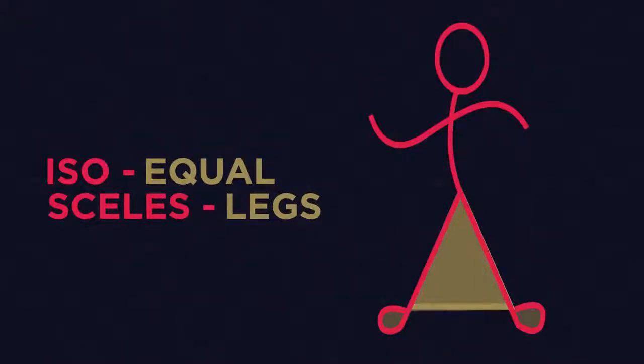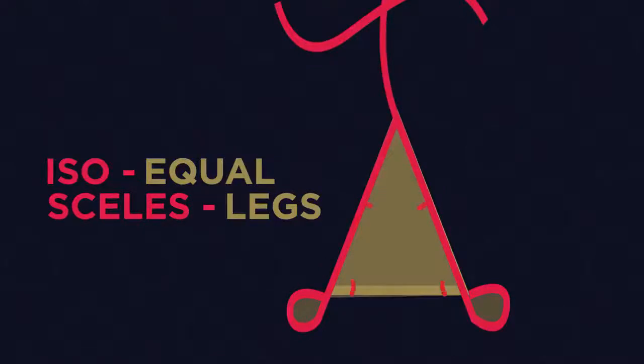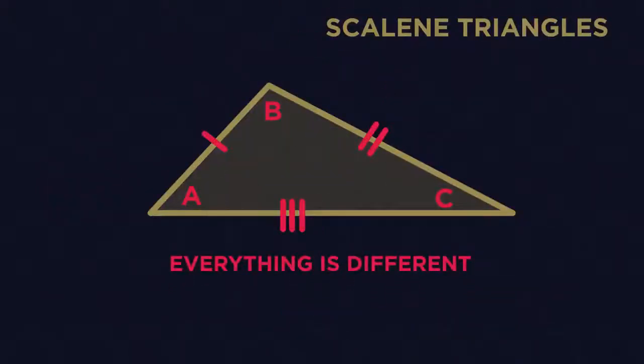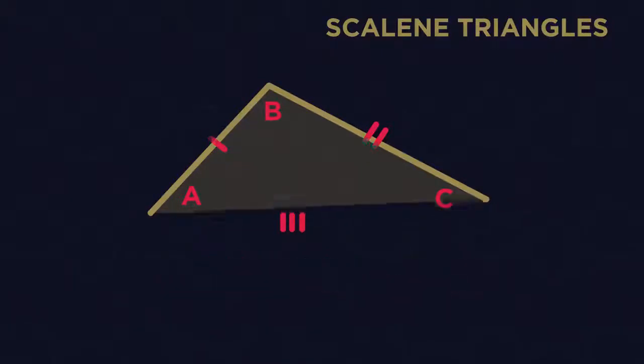So just remember that the word isosceles means equal legs. And so isosceles triangles have two sides and two angles the same because we have two legs. So then all you need to remember is that in scalene triangles everything is different.